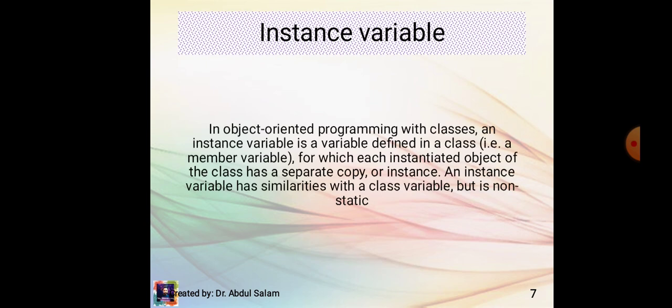In object-oriented programming with classes, an instance variable is a variable defined in a class — a member variable for which each instantiated object of the class has a separate copy or instance. An instance variable has similarities with a class variable but is non-static.